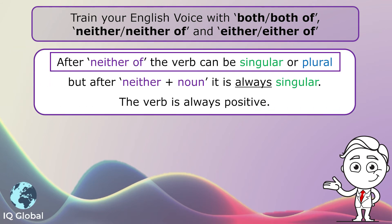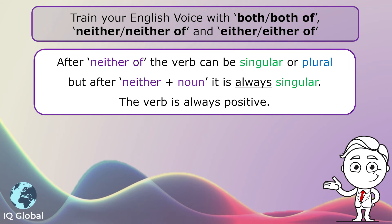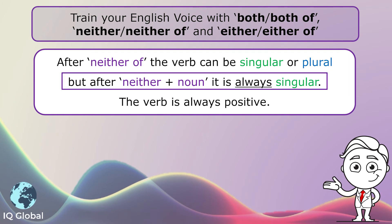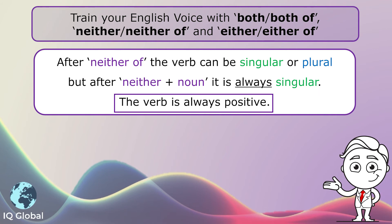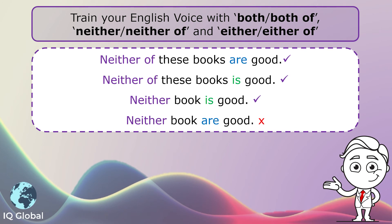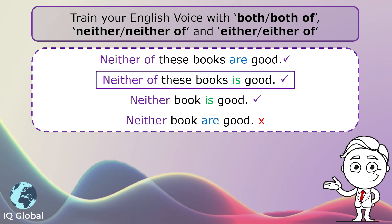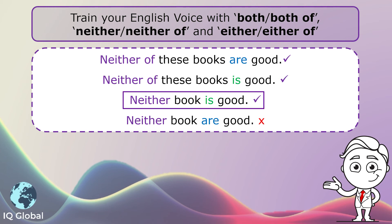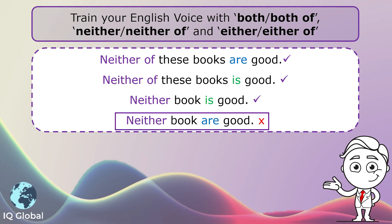After neither of, the verb can be singular or plural, but after neither plus a noun, it is always singular. The verb is always positive. Let's look at some examples: Neither of these books are good. Neither of these books is good. Neither book is good. We don't say 'neither book are good.'